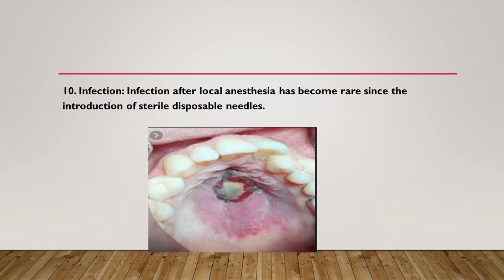Summary: to give efficient local anesthesia, you should have three elements — one, thorough anatomical knowledge; two, mastering a good technique; three, sterile handling of the dental syringe assembly. This is the end of our lecture. Good luck to our students, thank you.